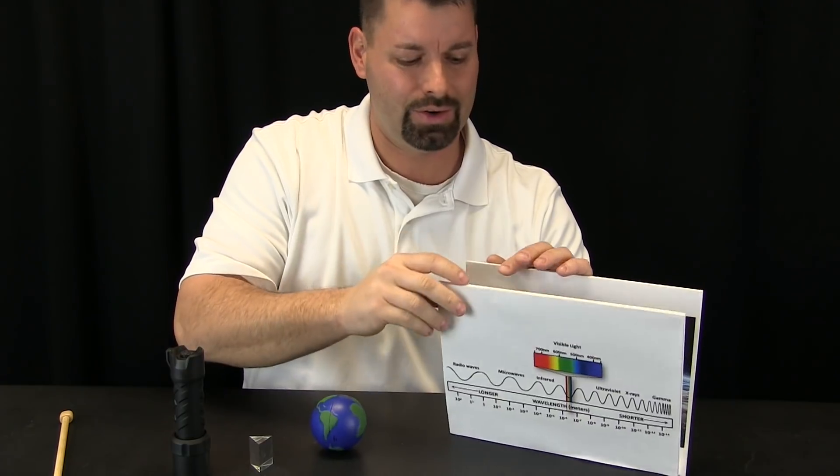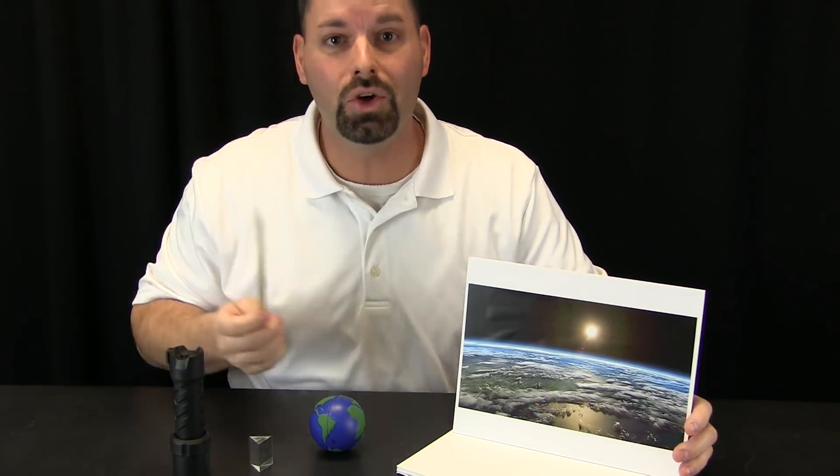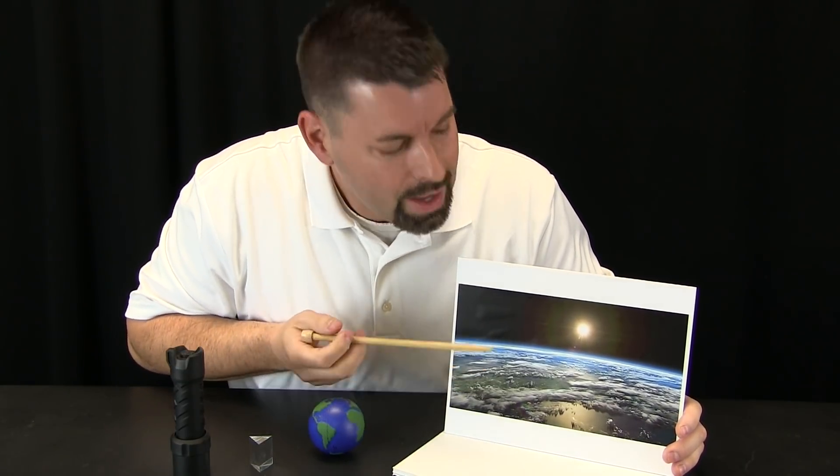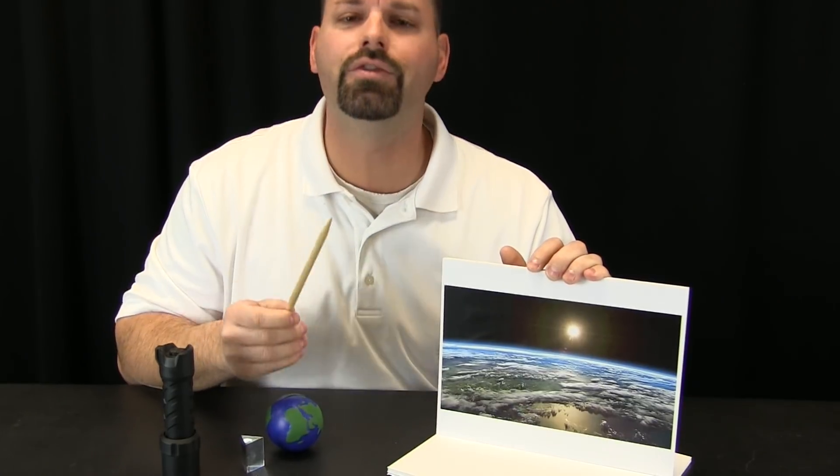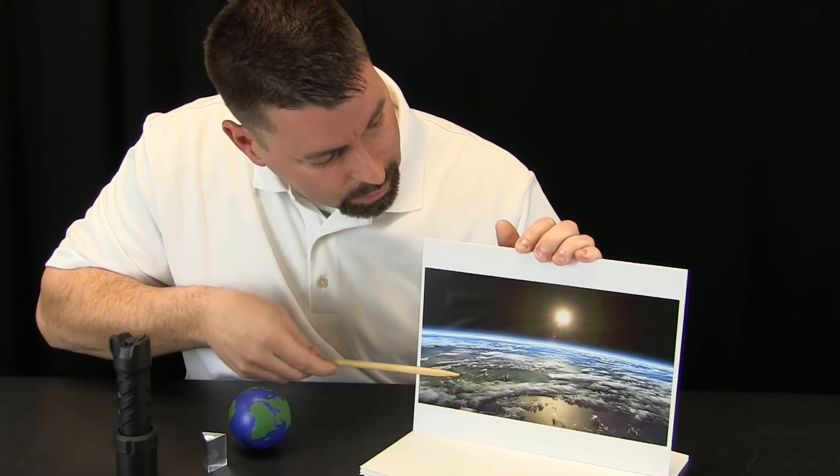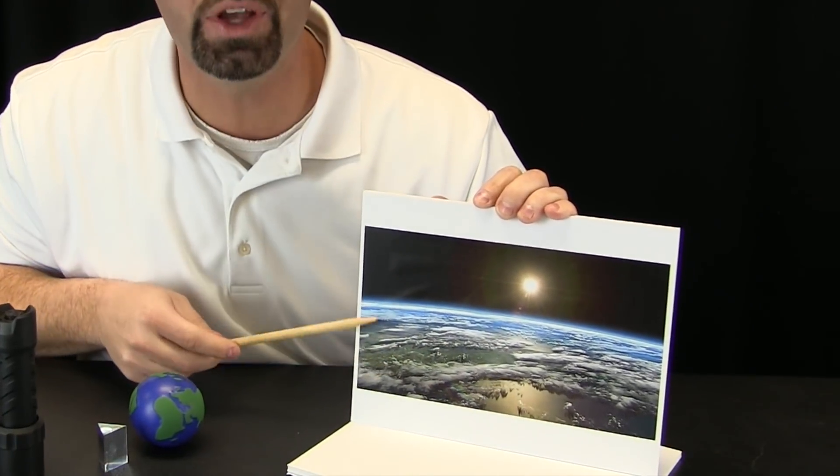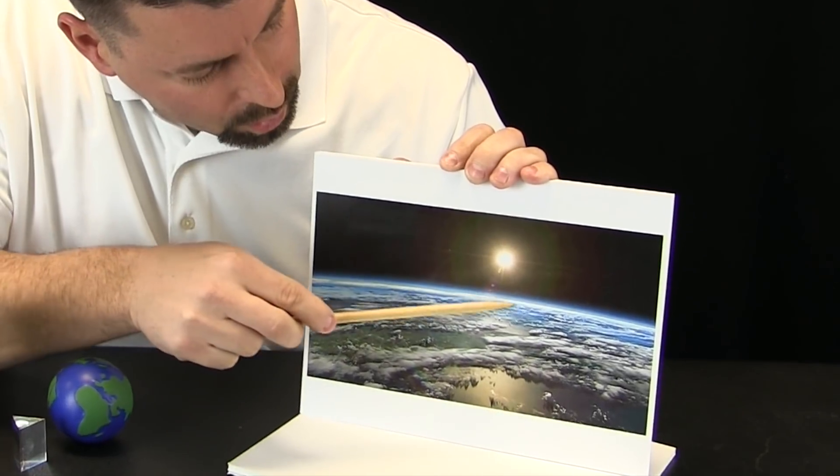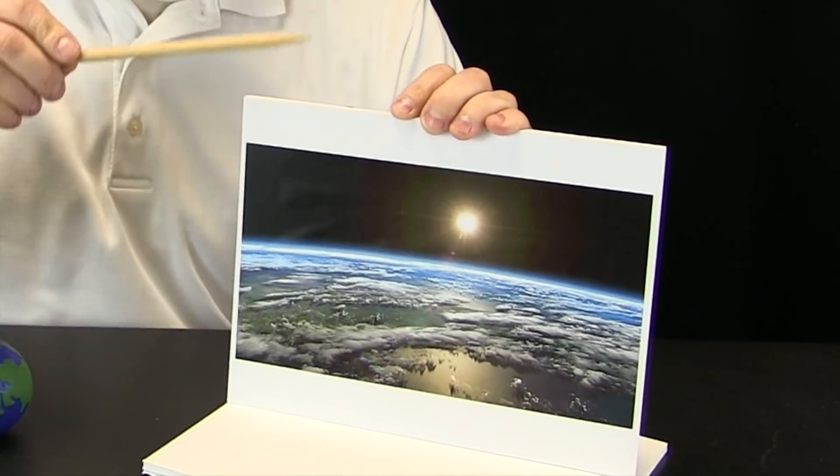Take a look at this picture. This is our earth, and what I want you to look at, and we are going to zoom in so you can take a closer look, is that blue band of color right on the edge of our atmosphere. This is a picture of our earth taken from outer space. Here is our earth down here. This is the Sun. These white things here are clouds, and look again at that blue band along our atmosphere. That is what we are going to take a closer look at.